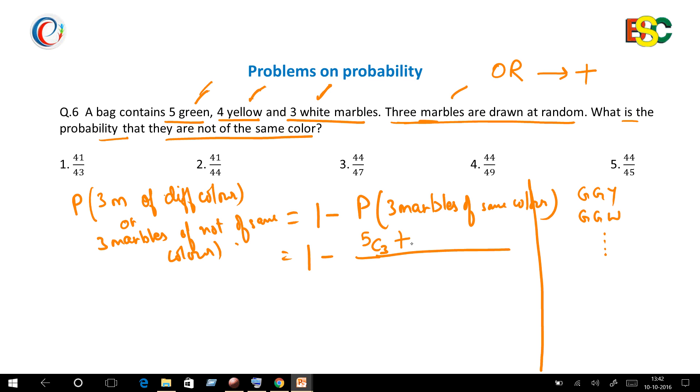Then if you want three marbles of yellow, it will be 4C3, and 3C3 is for three marbles of white color. Then it will be 5 plus 4 is 9, plus 3 is 12, over 12C3.